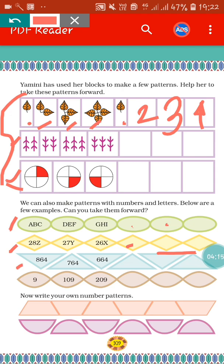Similarly, in the third one, you carry forward to 464 in this way. In the fourth one, the first is written as 9, the second is 109, the third is 209. So the fourth one will be 309, and the next one will be 409. In this way, you have to carry forward the pattern. And in the next two blocks, you can use any numbers and make your own pattern.